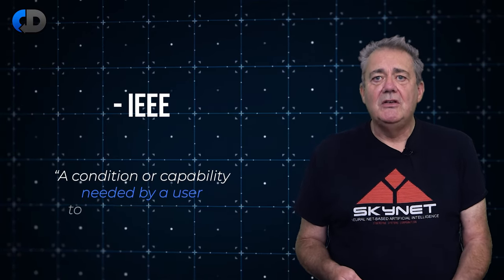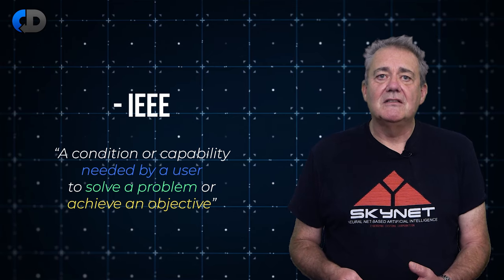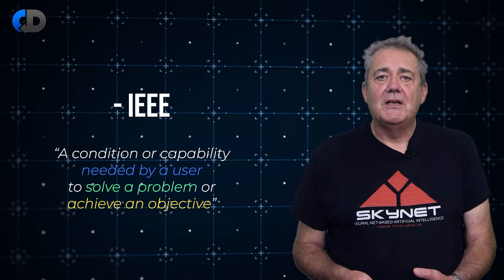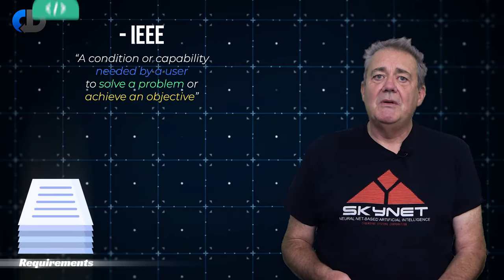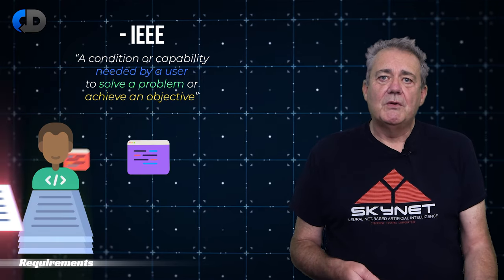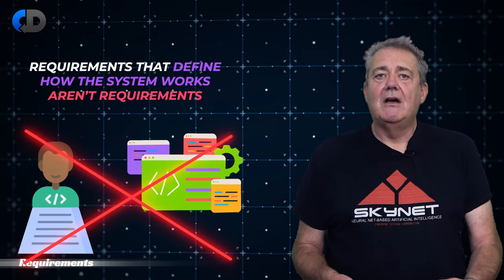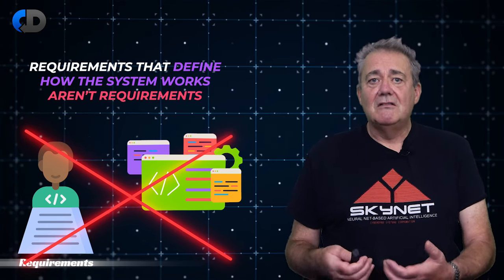Here's how the IEEE defines a requirement: a condition or capability needed by a user to solve a problem or achieve an objective. I'm pretty happy with that — it aligns very well with how I think about things. To guide our work, we need a brief description of what we need our software to do. This definition leaves very little room to interpret it as a detailed description of how to solve some unstated problem, which is what most requirements I see look like. If your requirements prescribe how the system works, they aren't really requirements at all. I see lots of organisations that, by my and IEEE's definition, don't have any requirements communicated to the development teams — instead, they have collections of high-level descriptions of a solution.